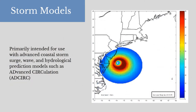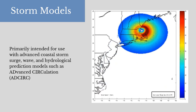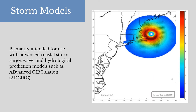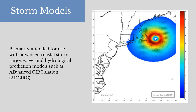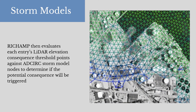Though it can utilize a number of different storm data sources, RIECHAMP is primarily intended for use with advanced coastal storm surge, wave, and hydrological prediction models such as ADCIRC. These high-resolution storm models are overlaid with ground-truthed, locally-derived vulnerability data from the IACT Critical Infrastructure Database. RIECHAMP then evaluates each entry's LIDAR elevation consequence threshold point against ADCIRC storm model nodes to determine if the potential consequence will be triggered and, in most cases, the estimated time of occurrence and the duration of impact.